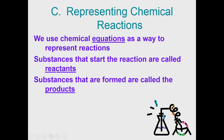Reactants are the things you start the reaction with — what you collect at the beginning of a lab before you mix anything together. Products are the things you produce, the things you make at the end of a chemical reaction.